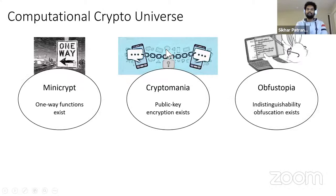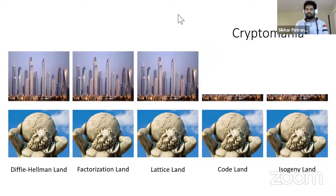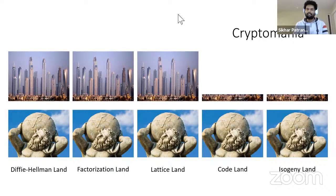Let's begin by recalling what the crypto universe looks like in the computational setting. We have the world of minicrypt where one-way functions exist, cryptomania where public key encryption exists, and the crypto dream world of fastopia where indistinguishability obfuscation exists. Over the past several decades, cryptographers have attempted to validate the existence of these worlds by instantiating them from concrete computational assumptions. Cryptomania typically consists of many rich public key crypto primitives built from Diffie-Hellman assumptions, factorization assumptions, and more recently from lattice-based assumptions. Unfortunately, not similar progress has been made from code-based or isogeny-based assumptions, so these are not yet mainstream cryptographic assumptions.